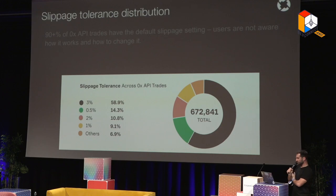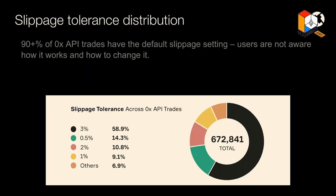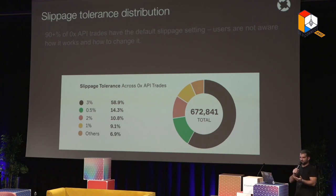The first data point was the distribution of slippage tolerance — what users set in the UI. Most slippage tolerance was over two percent, because two very popular applications, Coinbase Wallet and MetaMask, have defaults of two to three percent. Matcha defaults to 0.5 percent, shown as the green slice here. A key conclusion: users do not change slippage tolerance — they pick whatever the UI tells them, with over 90 percent set at the default values of 0.5, 1, 2, or 3 percent.